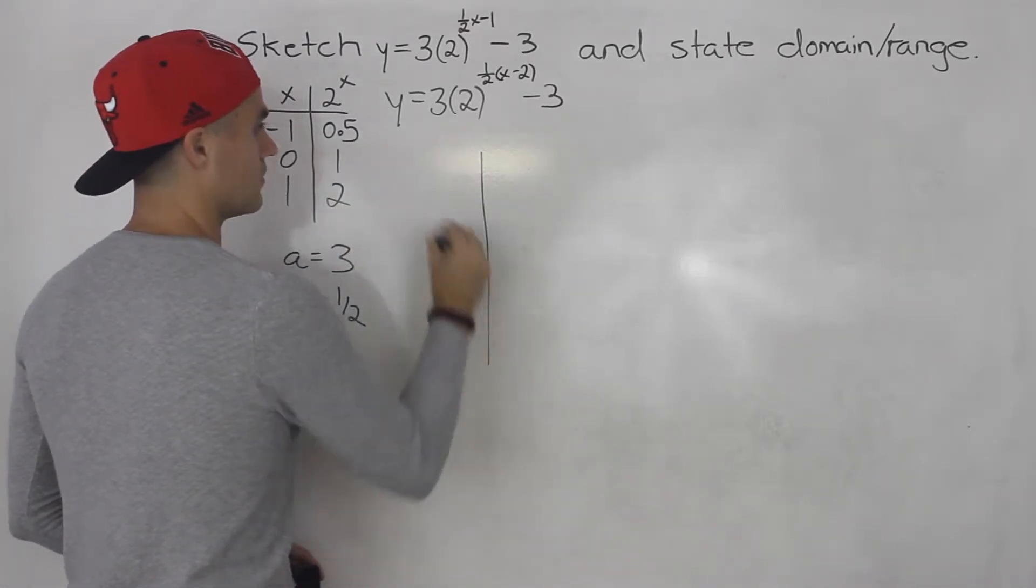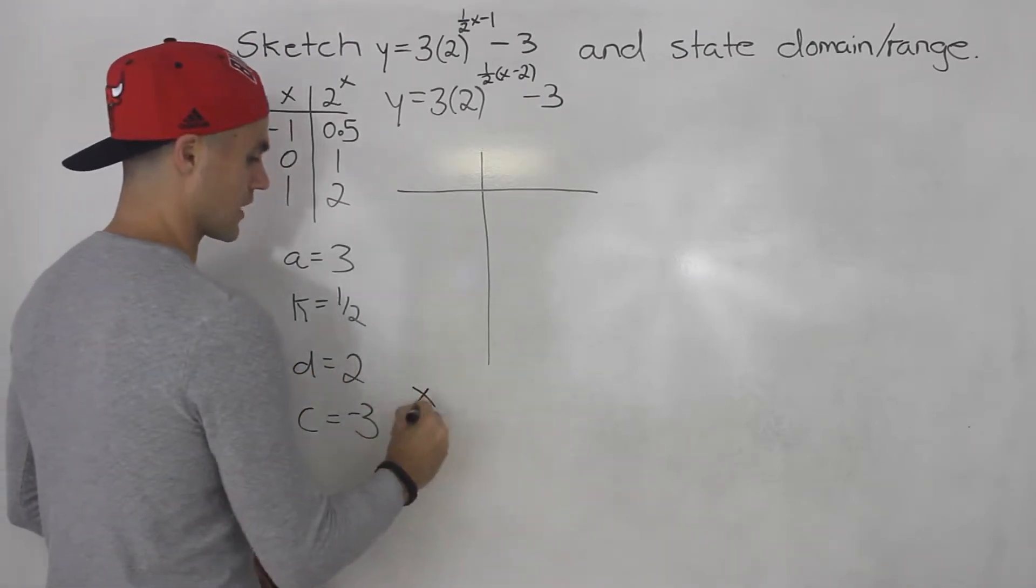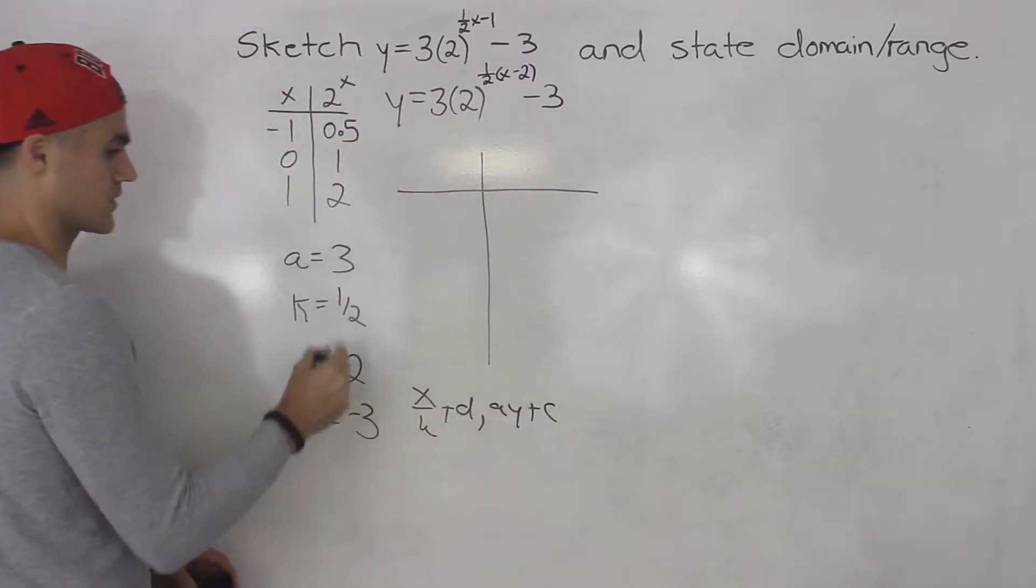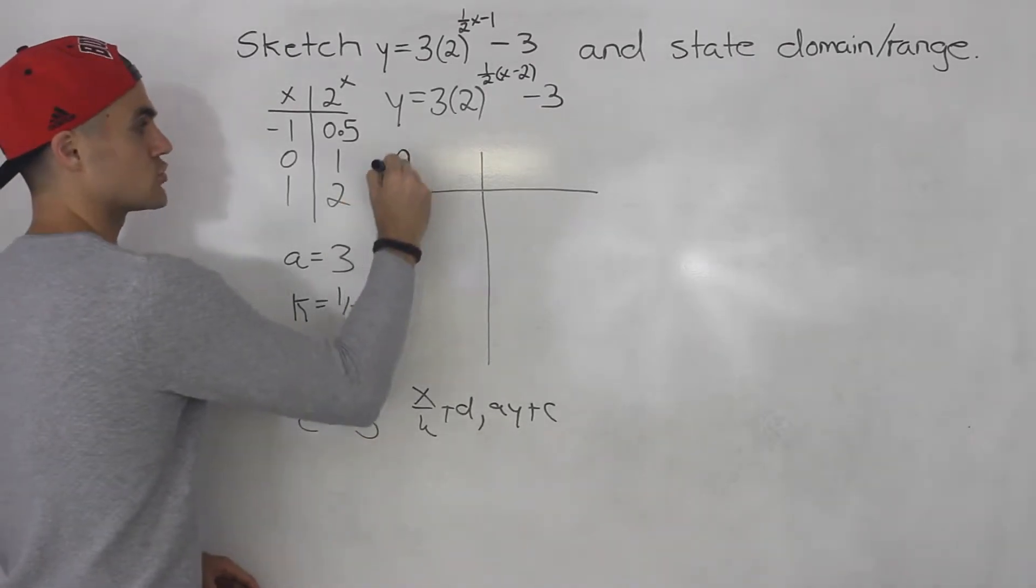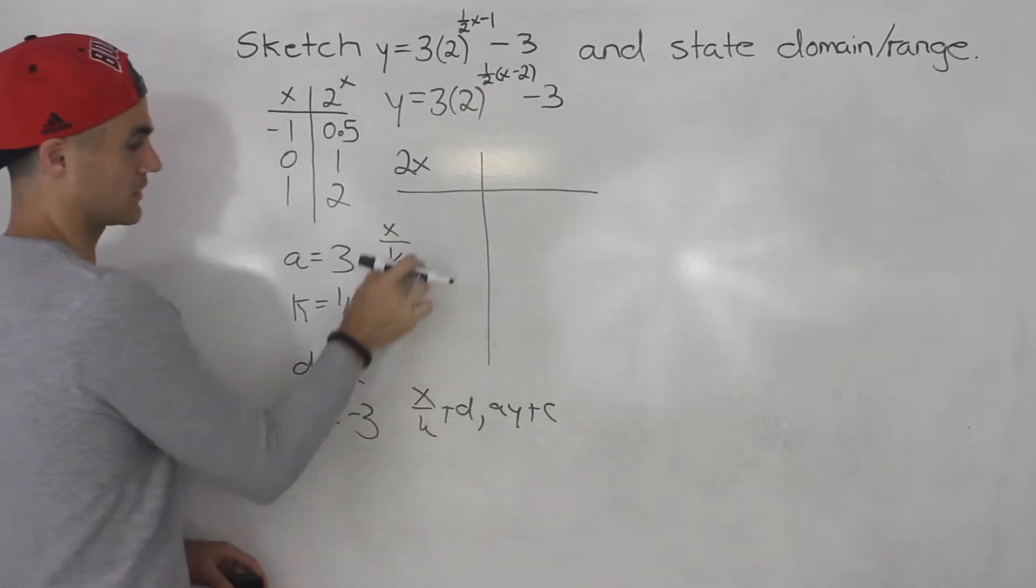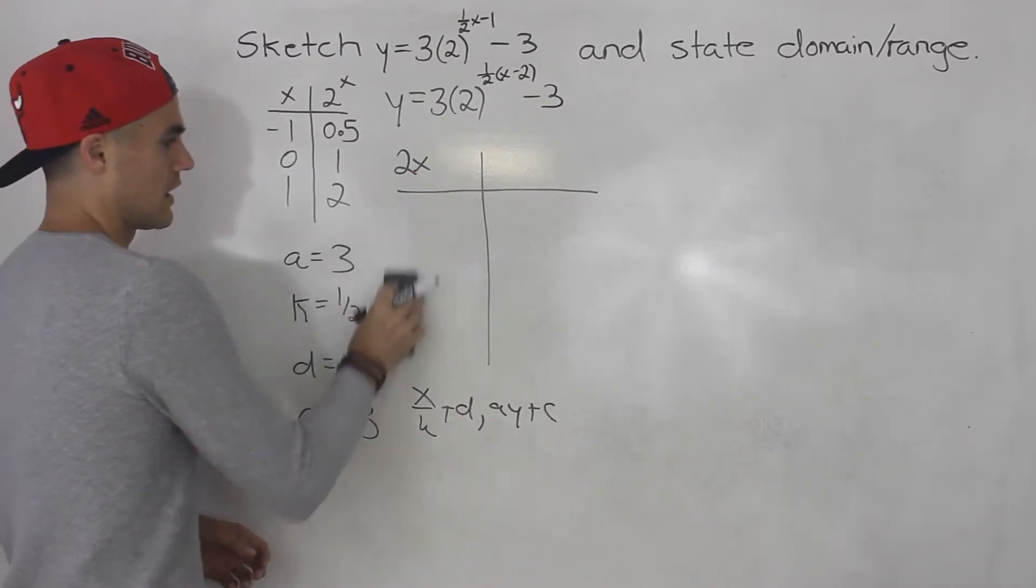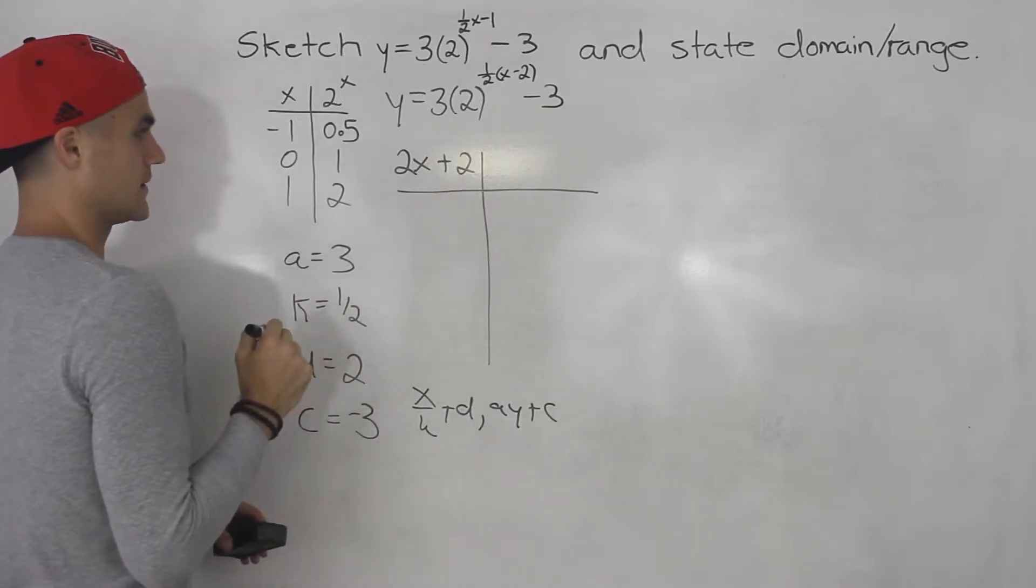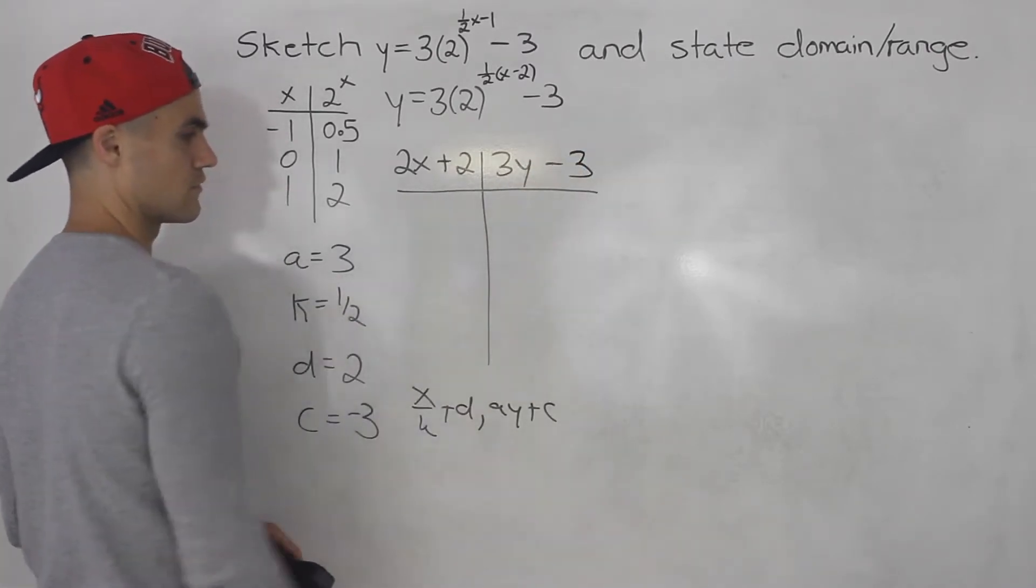So we're going to take this table and we're going to transform it with the formula x over k plus d, a y plus c. So all the x values we're going to divide by 1 half. Now when you divide something by 1 half that's like multiplying it by 2. So you could just write 2x. But you could also write x over 1 half if you feel more comfortable just putting that whole k value in the bottom. This and this they're the same thing. And then we're going to add that d value of 2. All the y values multiplied by 3. And then we're going to subtract the c value of 3.